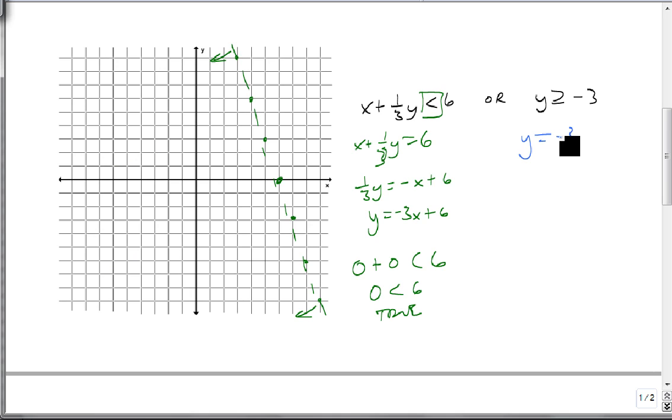For our second one, y equals minus 3, that's just at the minus 3 line. This one's solid because of the 'or equals'. And y is greater than means we shade above, because we want all the y values that are bigger than it. So this shades upward.